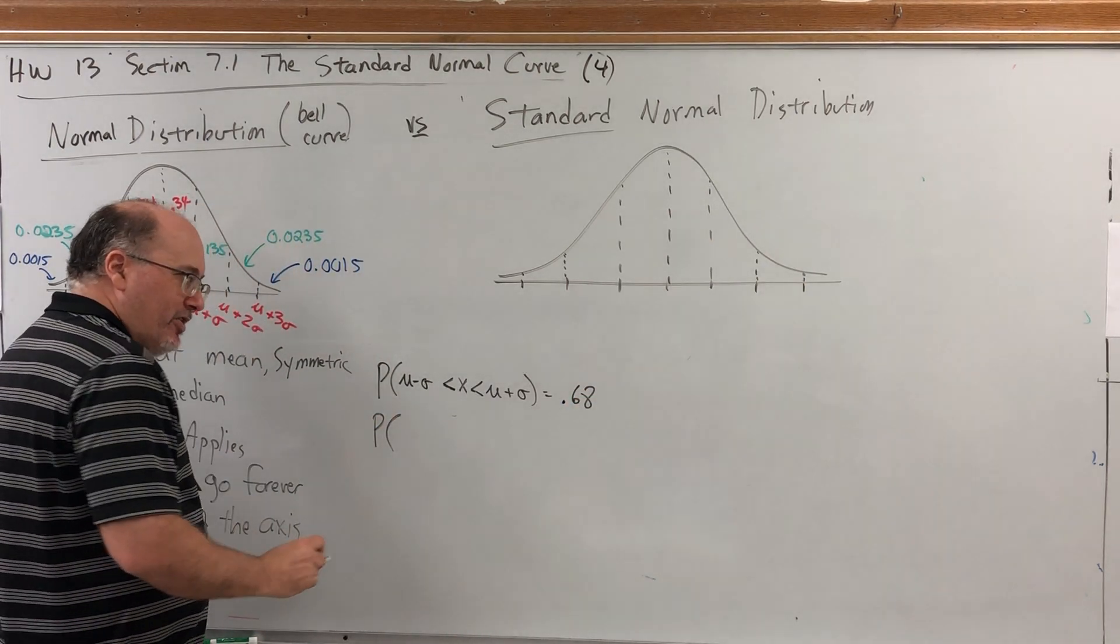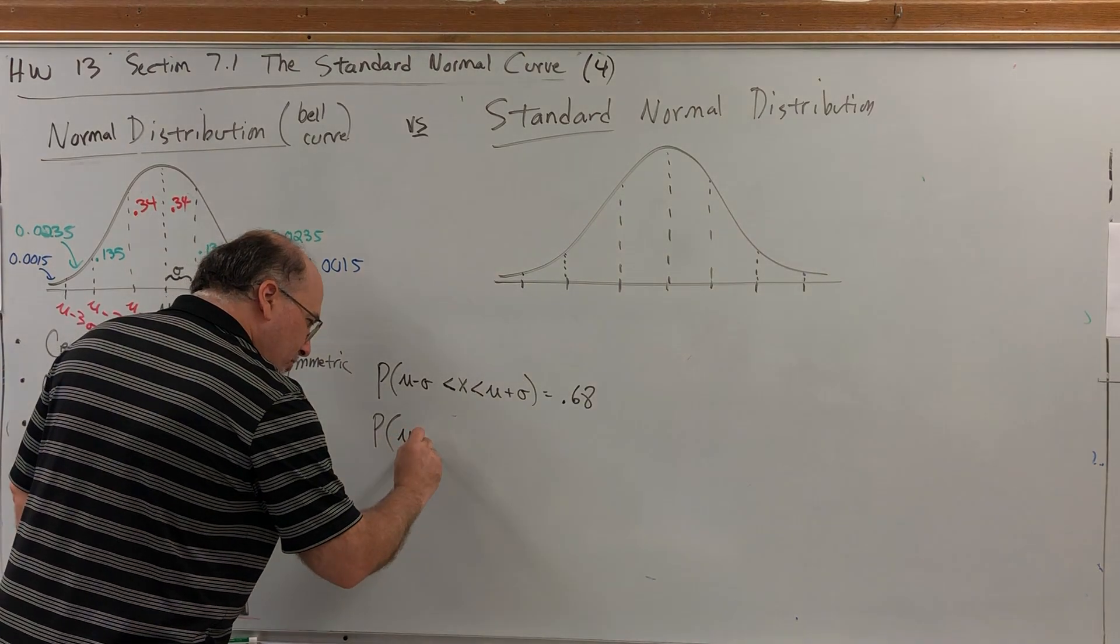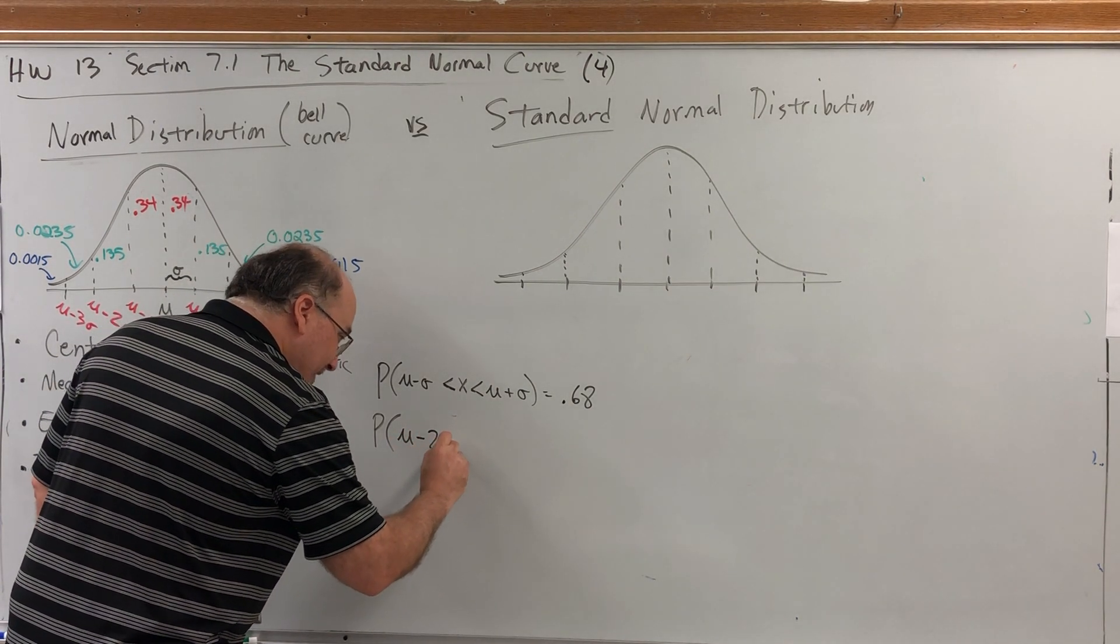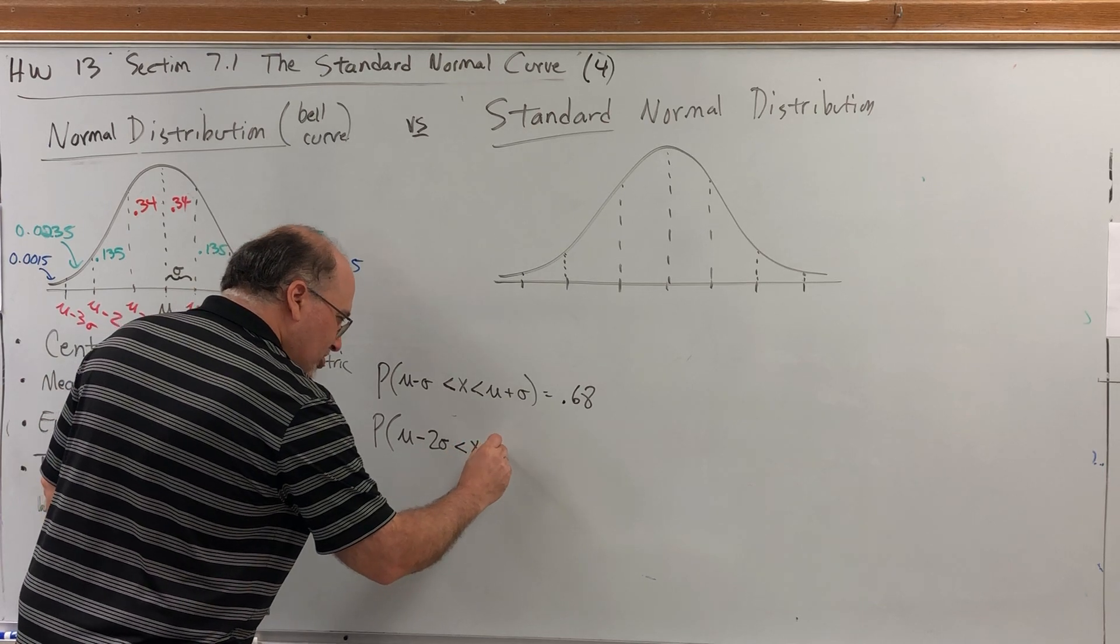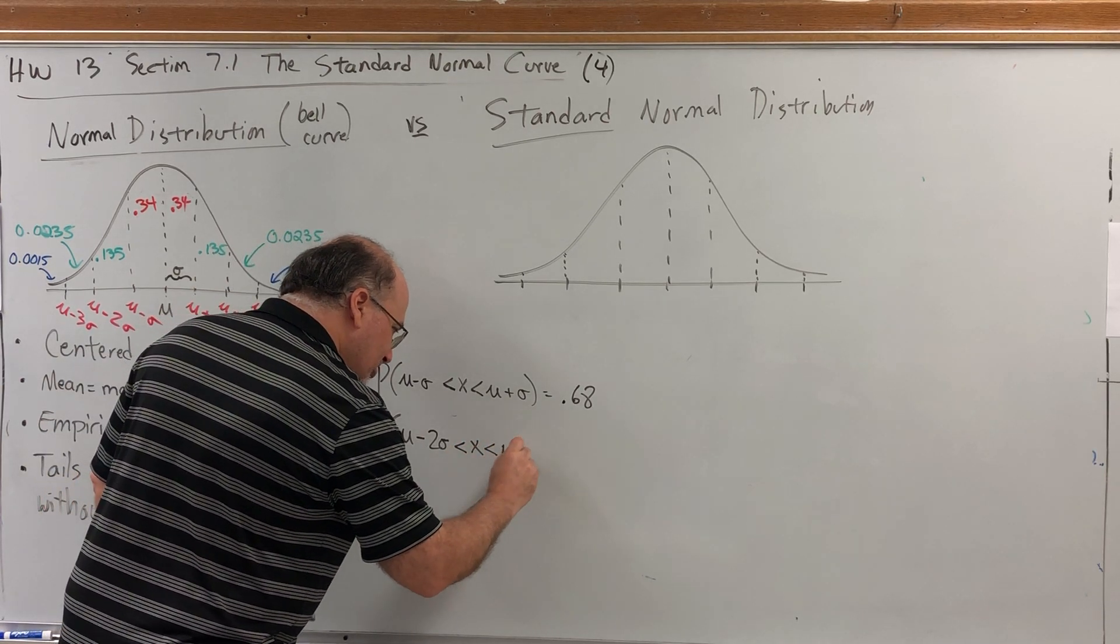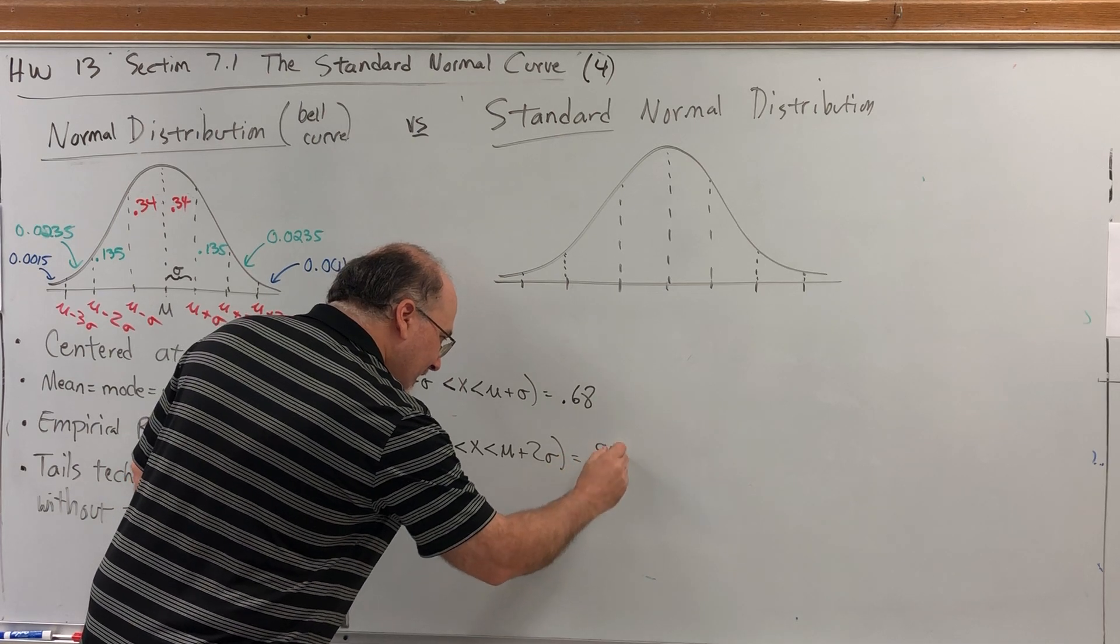For two standard deviations, the probability that mu minus 2 sigma is less than x, which is less than mu plus 2 sigma, is 0.95.